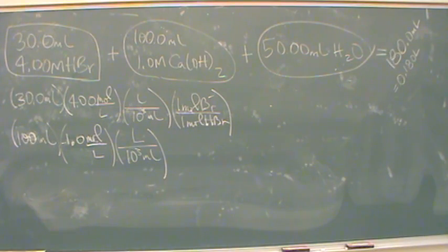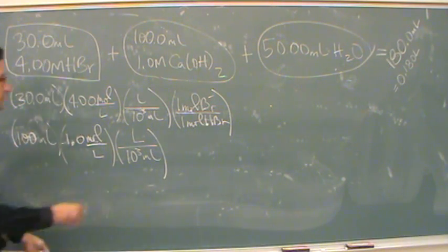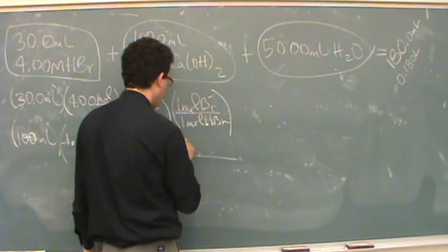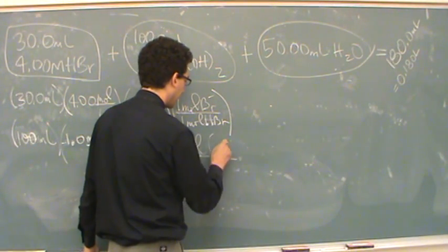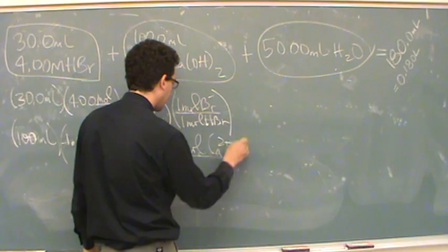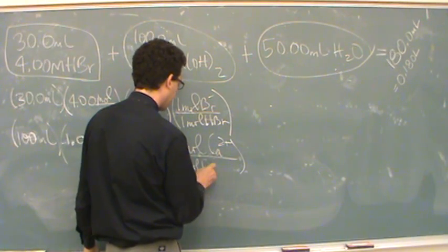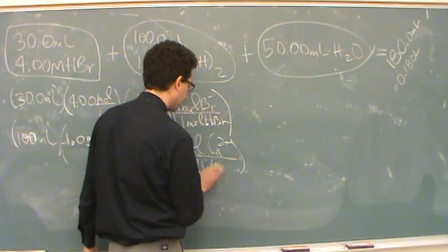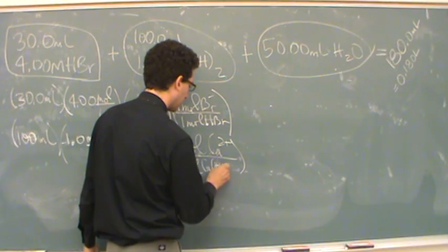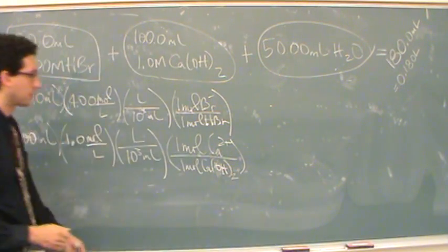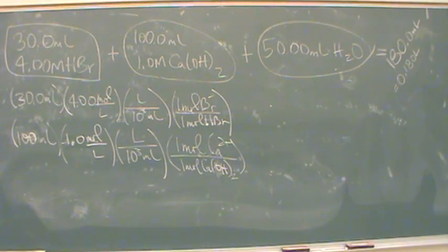Again, because of the question: what's the moles of the ion calcium, not calcium hydroxide. Just to be complete, I'm going to take one more step. There's one mole of calcium for every one mole of calcium hydroxide.